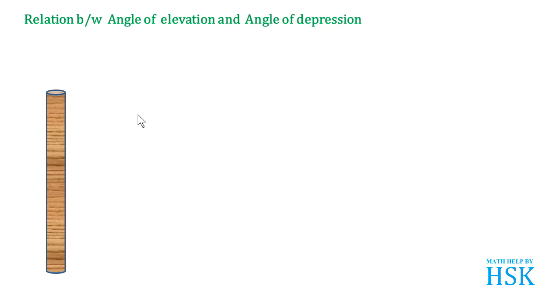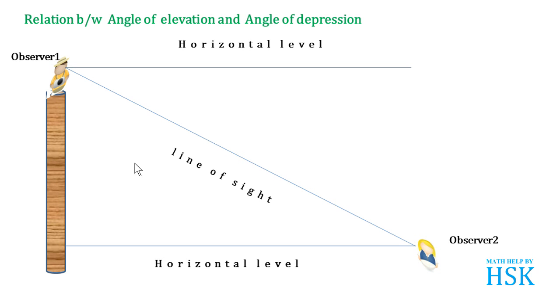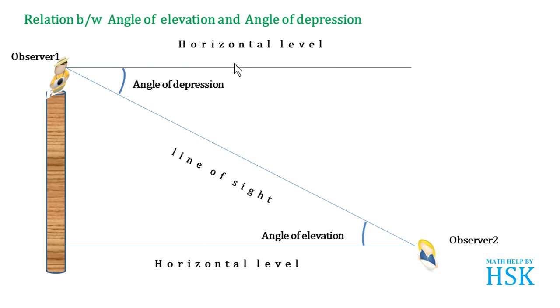There is a relation between the angle of elevation and angle of depression. Consider that we have a tower with Observer 1 standing on it and Observer 2 standing on the ground. This is the horizontal level for Observer 1, and this is the horizontal level for Observer 2. They view each other, so this will be the line of sight. For Observer 1, the angle between the horizontal level and the line of sight is the angle of depression. For Observer 2, the angle between the horizontal level and the line of sight is the angle of elevation. Because the horizontal levels for both observers are parallel, a transversal forms alternate angles between them, and alternate angles are equal.